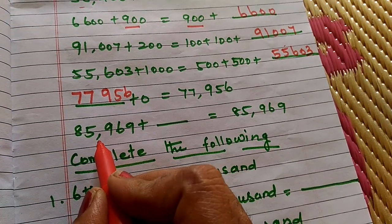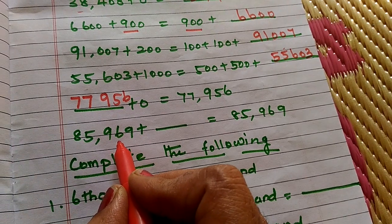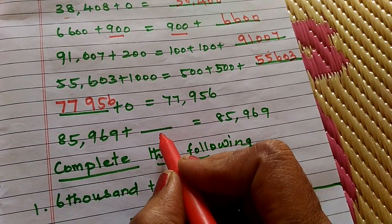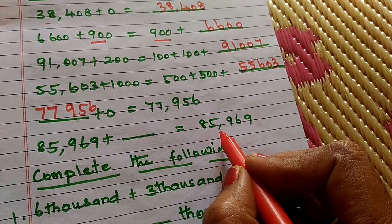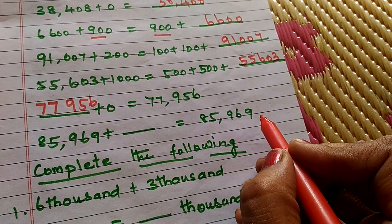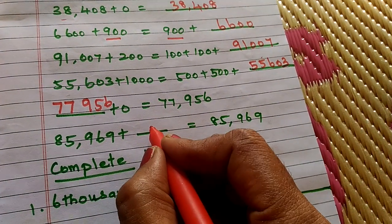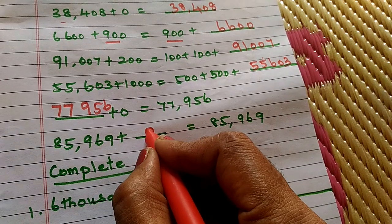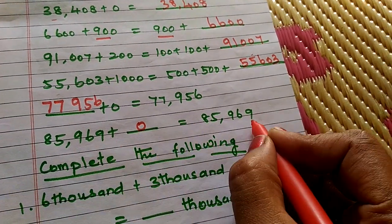Then, 85,969 plus dash equals 85,969. Here is 0. If you add any number to 0, you get same number.